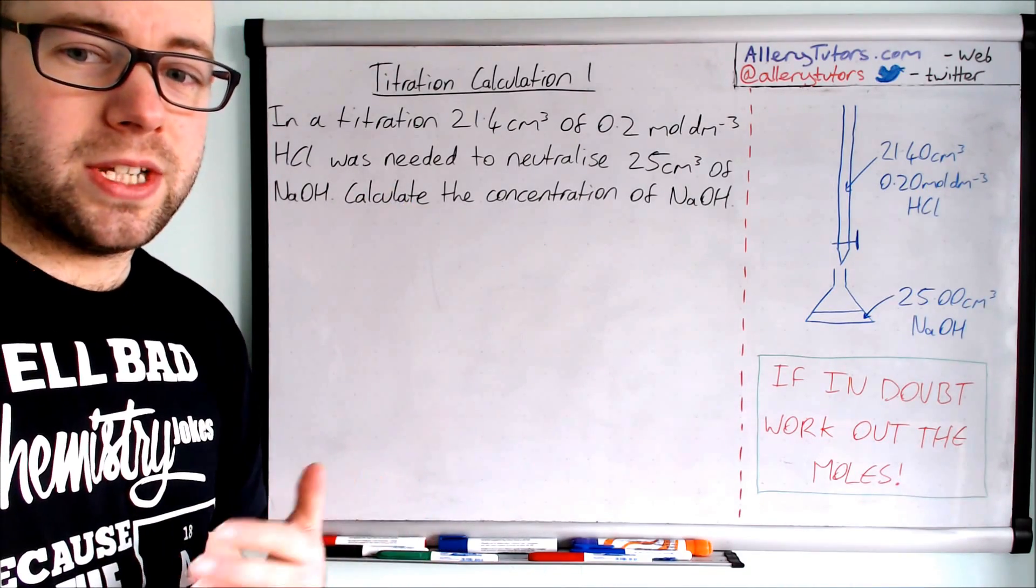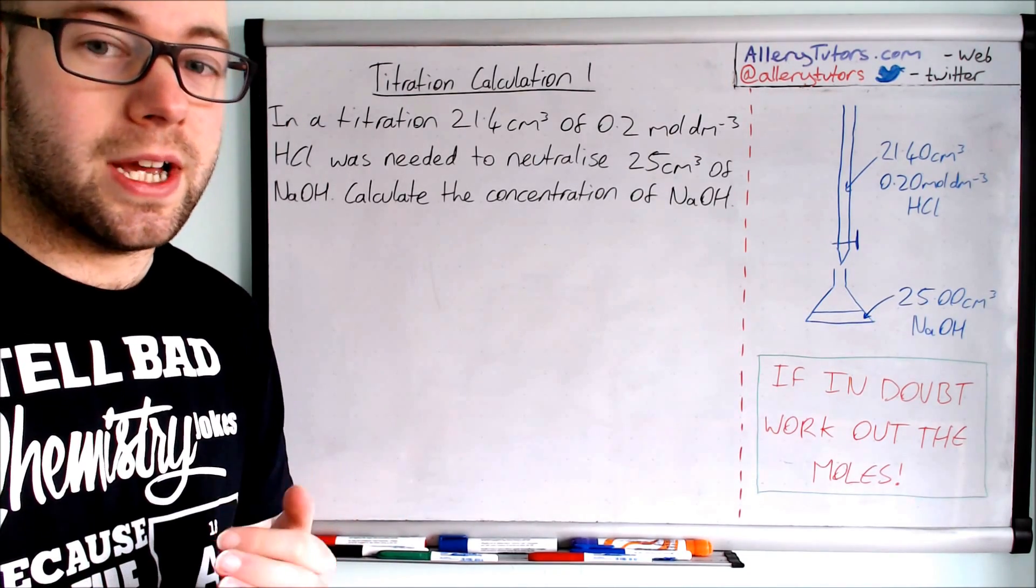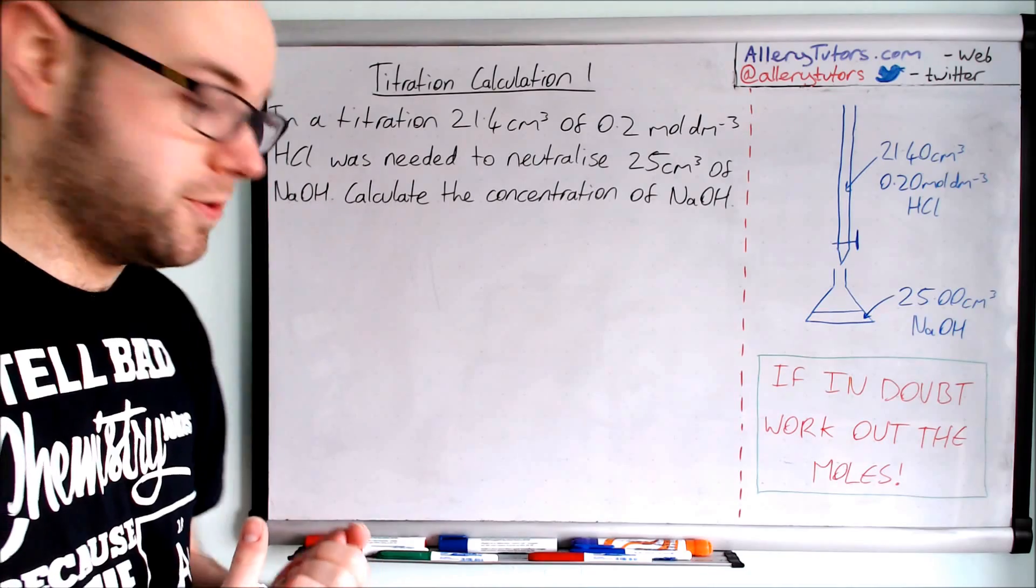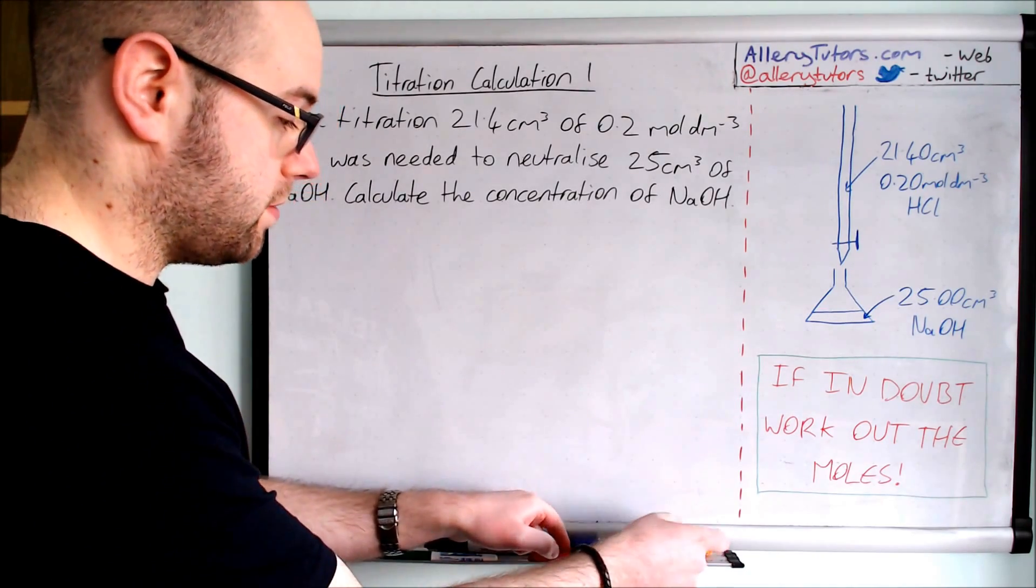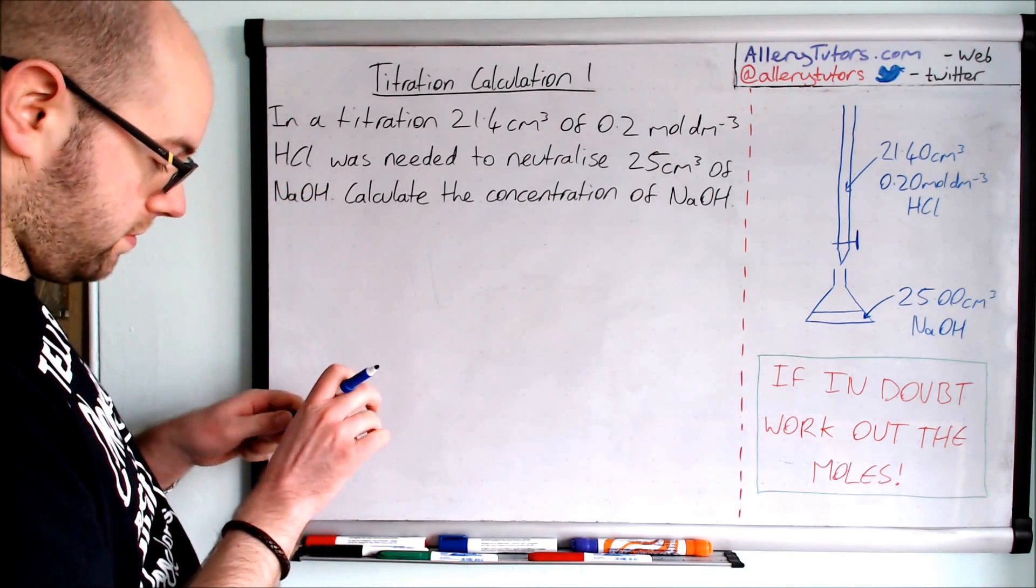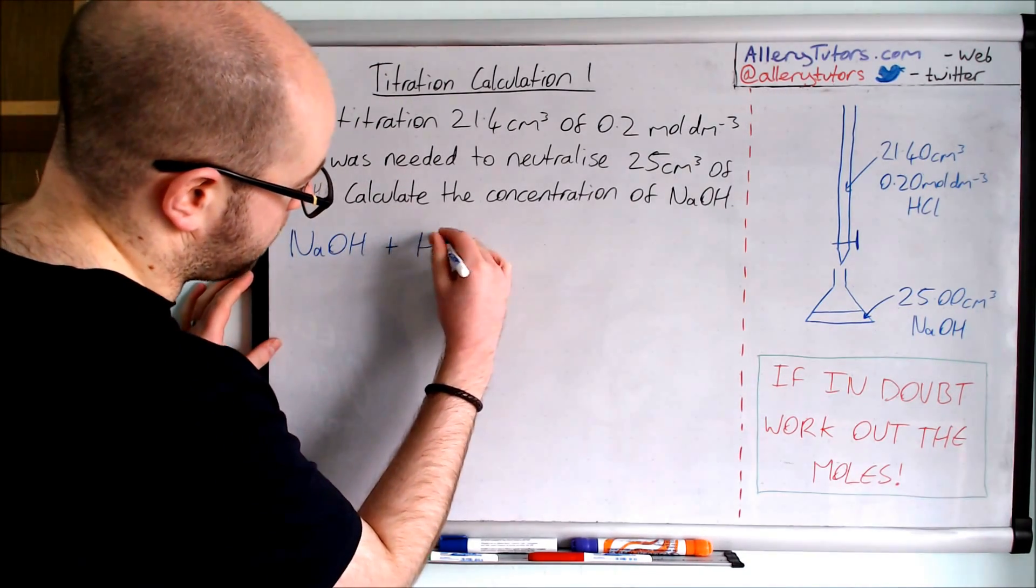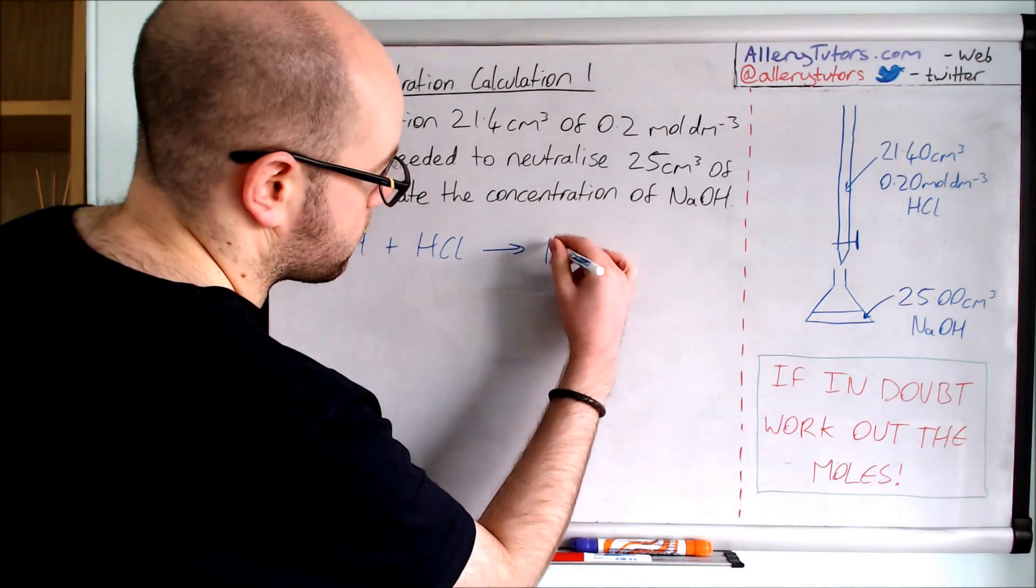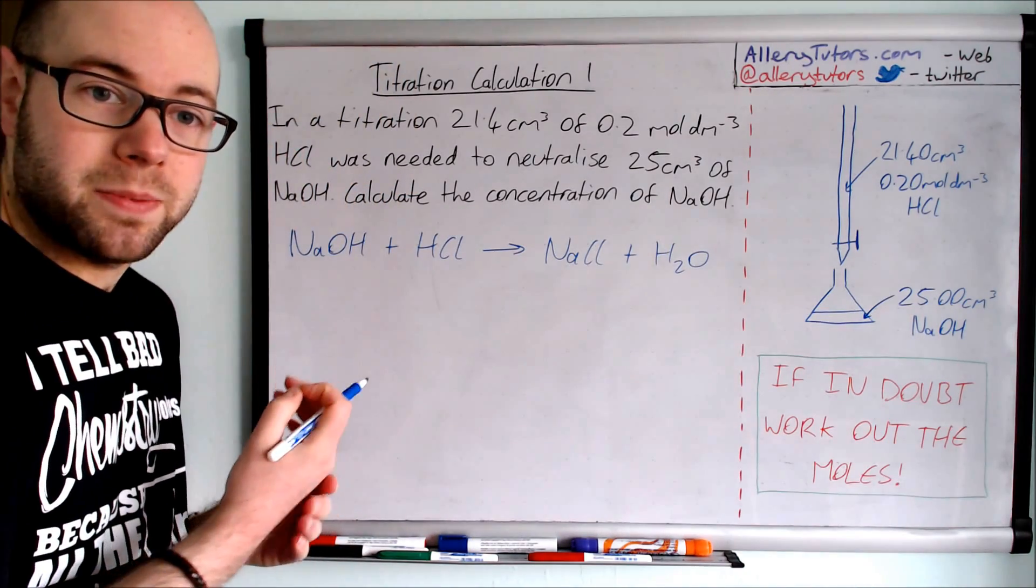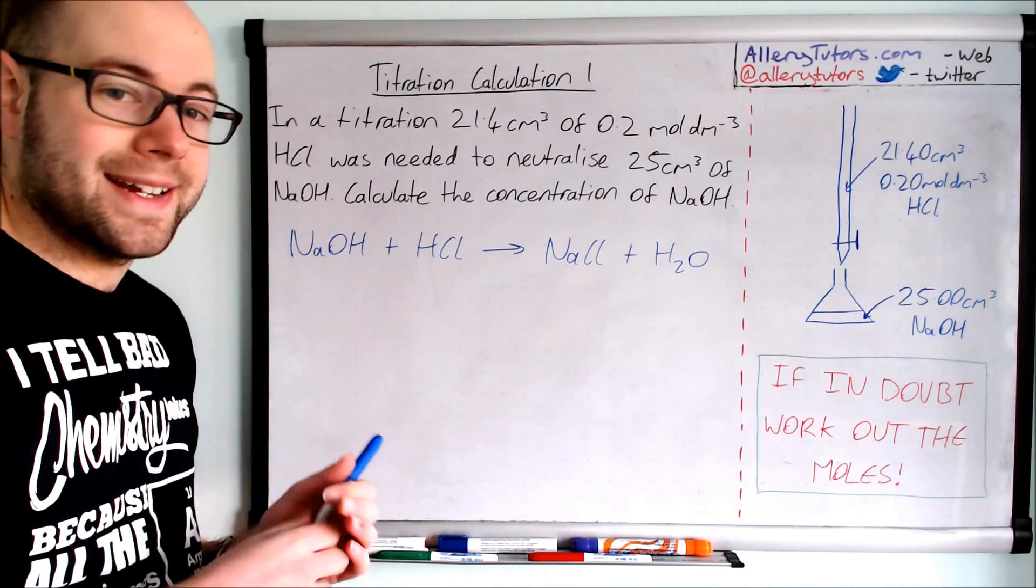The first thing we need to do is write out an equation. Sometimes in the exam they give you one, but in this case we'll write it ourselves. NaOH + HCl → NaCl + H2O. You've got to make sure this is balanced because that's really important, but in this case it's reasonably balanced so you don't need to add anything onto it.